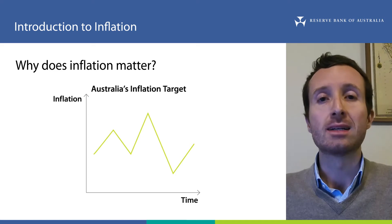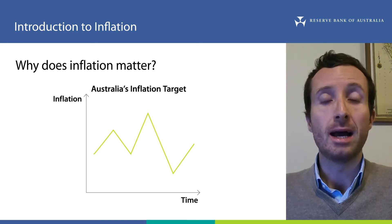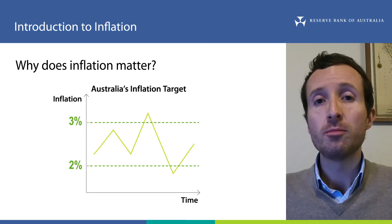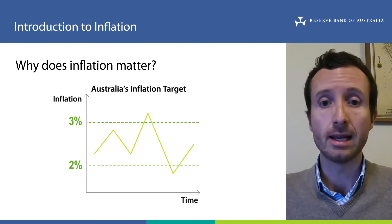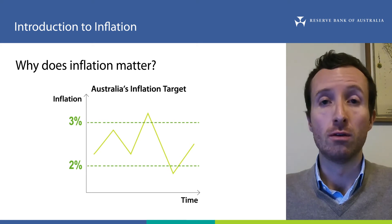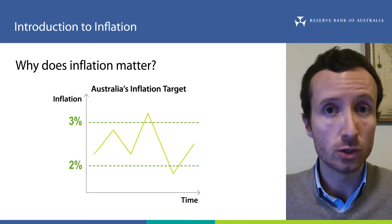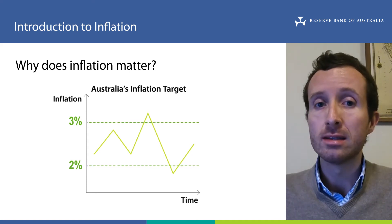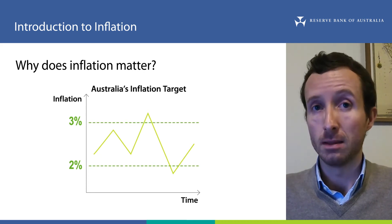In Australia, the Reserve Bank's monetary policy decisions are guided by a flexible inflation target. The RBA's target is to keep annual CPI inflation between 2% and 3% on average over time. The Reserve Bank uses this inflation target to help achieve its goals of price stability, full employment, and the prosperity and welfare of the Australian people. Monitoring inflation over time allows the RBA to evaluate the outcome of past decisions and inform its future decisions. How inflation targeting works, the way the Reserve Bank implements monetary policy, and what causes higher or lower inflation are explained in more detail in other videos available on our website.